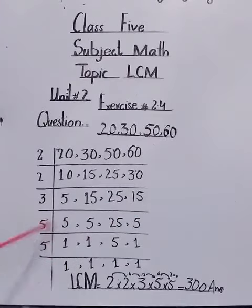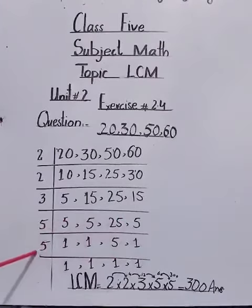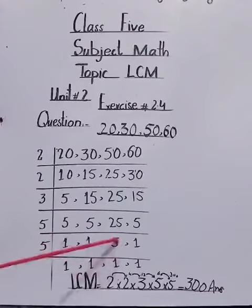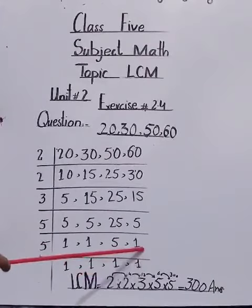5, 1 times 5 is 5. 5, 1 times 5 is 5. 5 times 5 are 25. 5, 1 times 5 is 5. 5. These all ones will come down same. 5, 1 times 5 is 5. This one also will come down same.